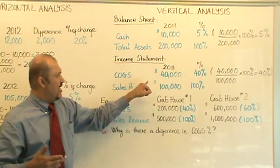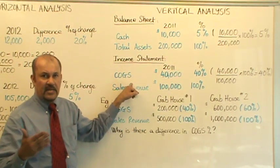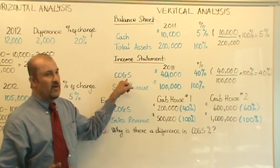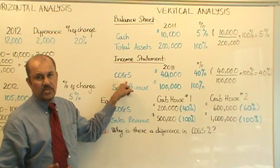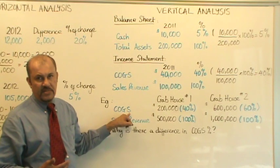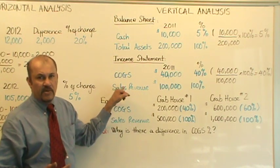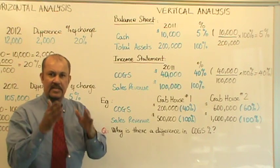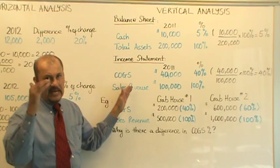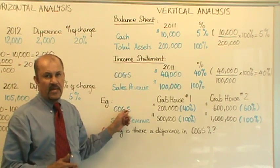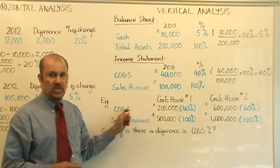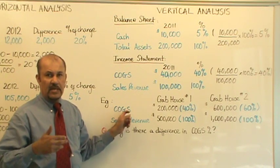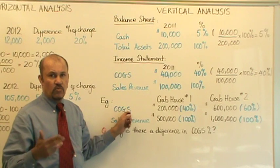Similarly, you can take any other item on the income statement and express it as a percentage of the base, which in this case is the sales revenue. For instance, you could have rent expense as a percentage of sales revenue, or salaries expressed as a percentage of sales revenue, and so on. Typically, in an income statement, the sales revenue would be your base.